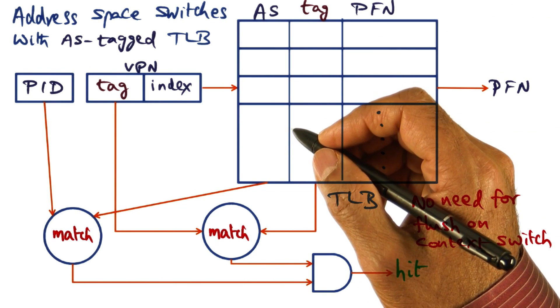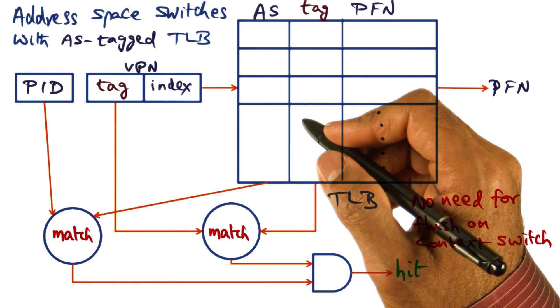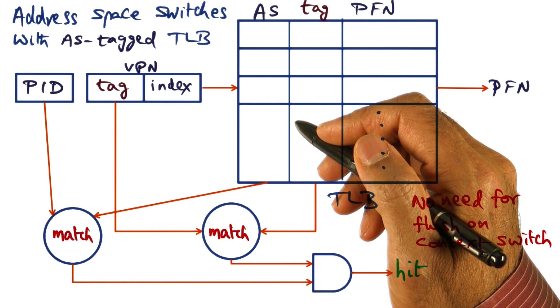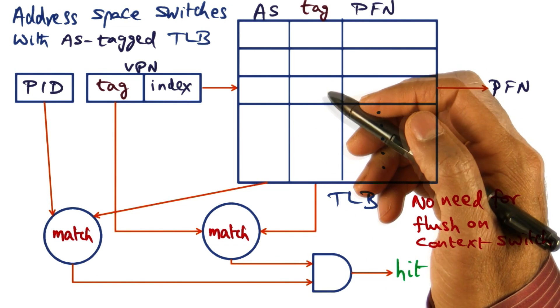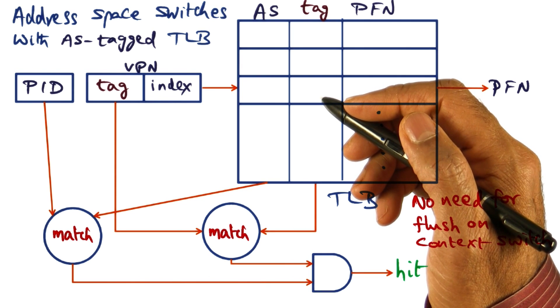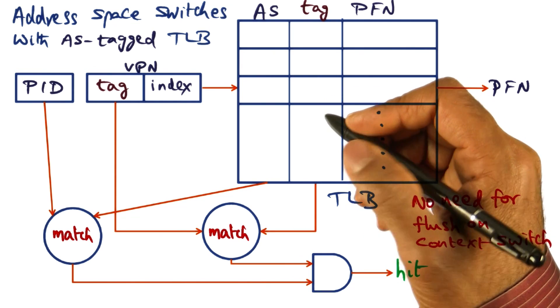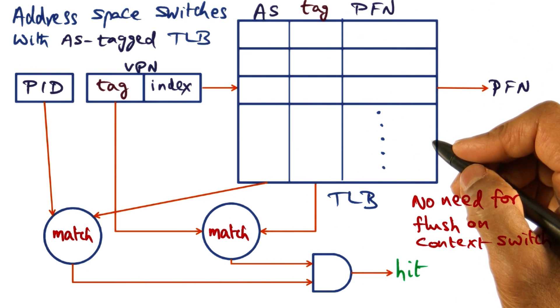But if the memory management hardware does not support address space tags, what do we do? This is the case, for instance, in the Intel architecture where the TLB does not have address space tags.